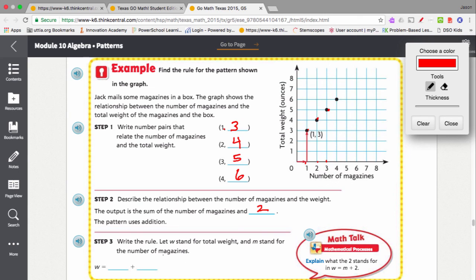So, let's write the rule. If w is the weight, which was here on our y-axis, and m is the magazine, which was on our x-axis, then w equals m plus 2.